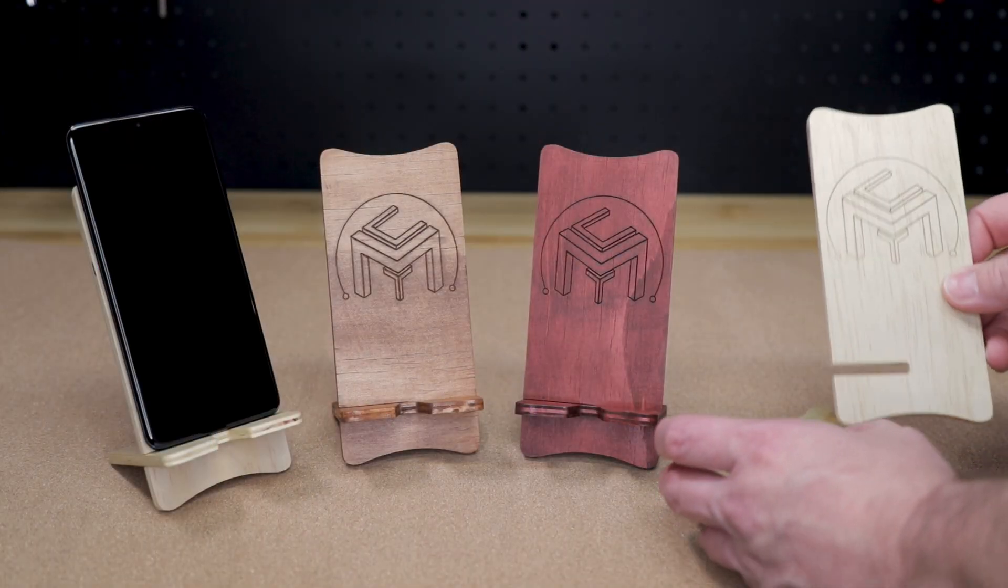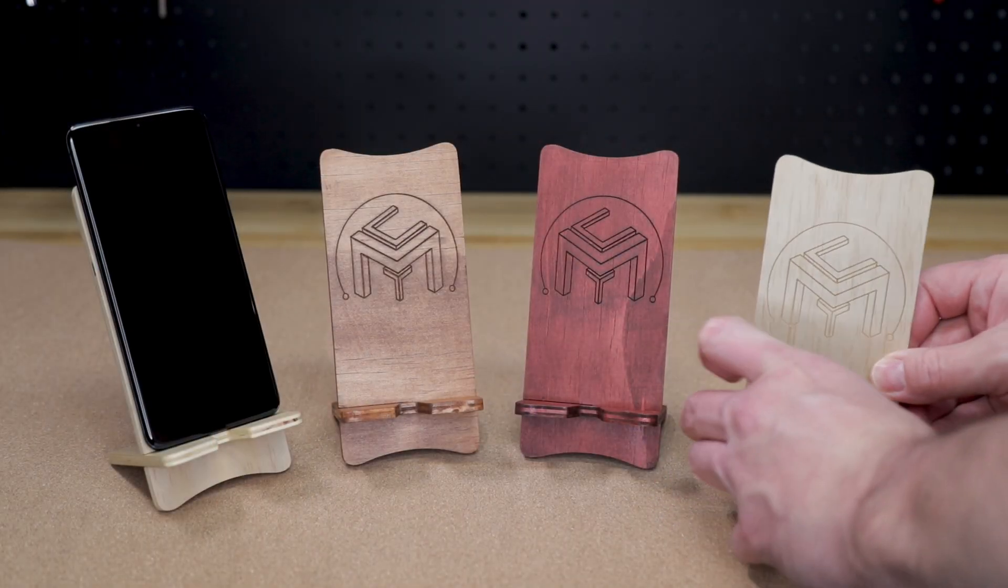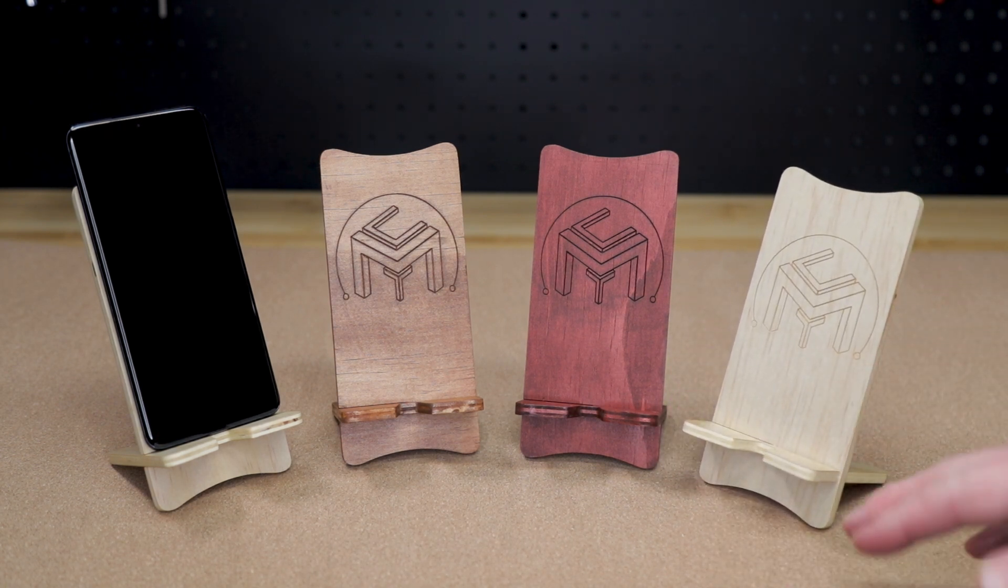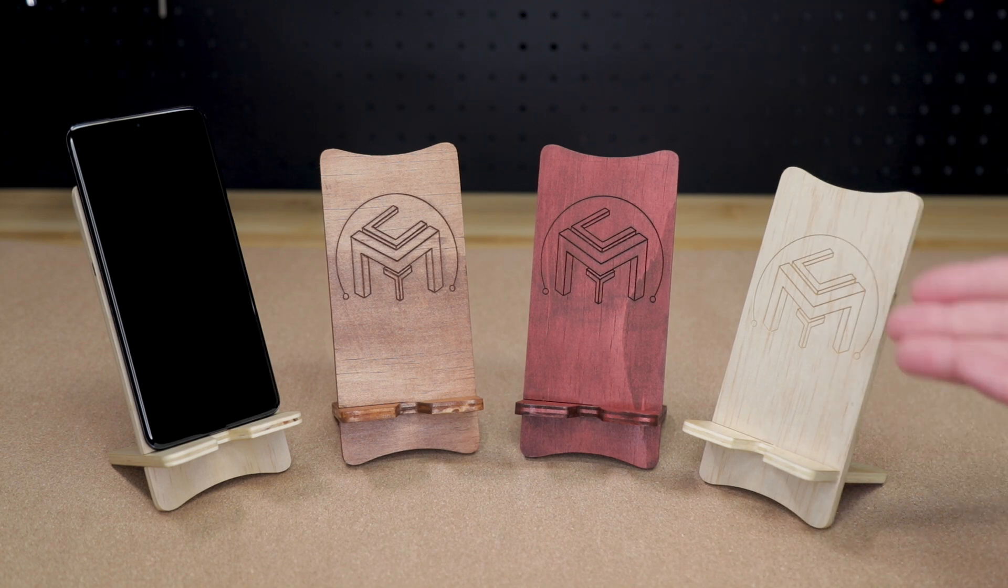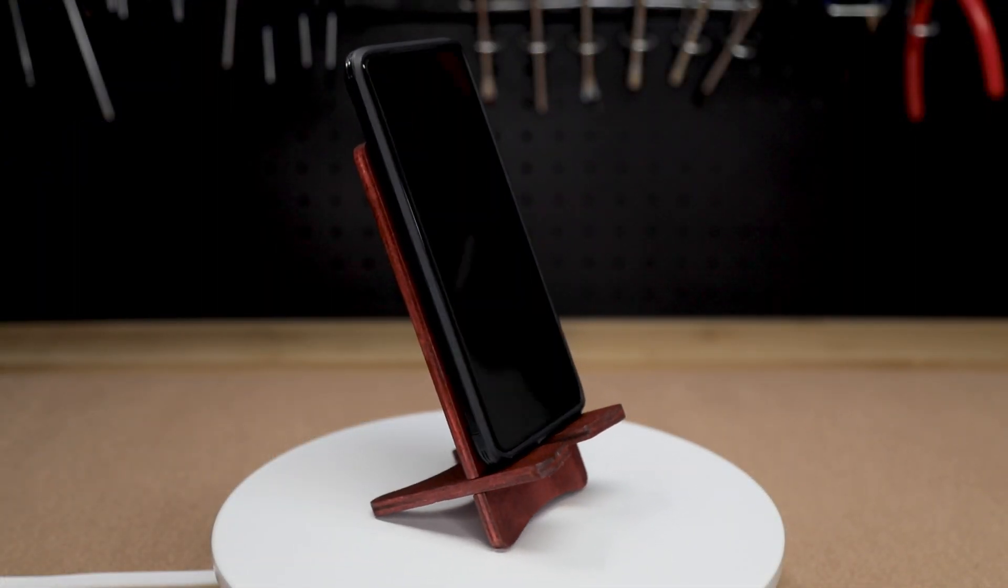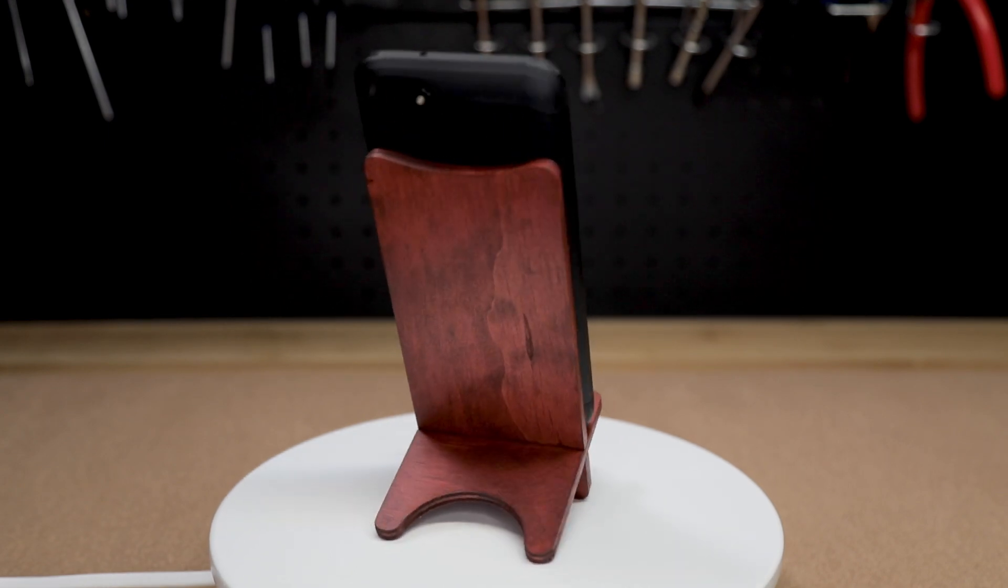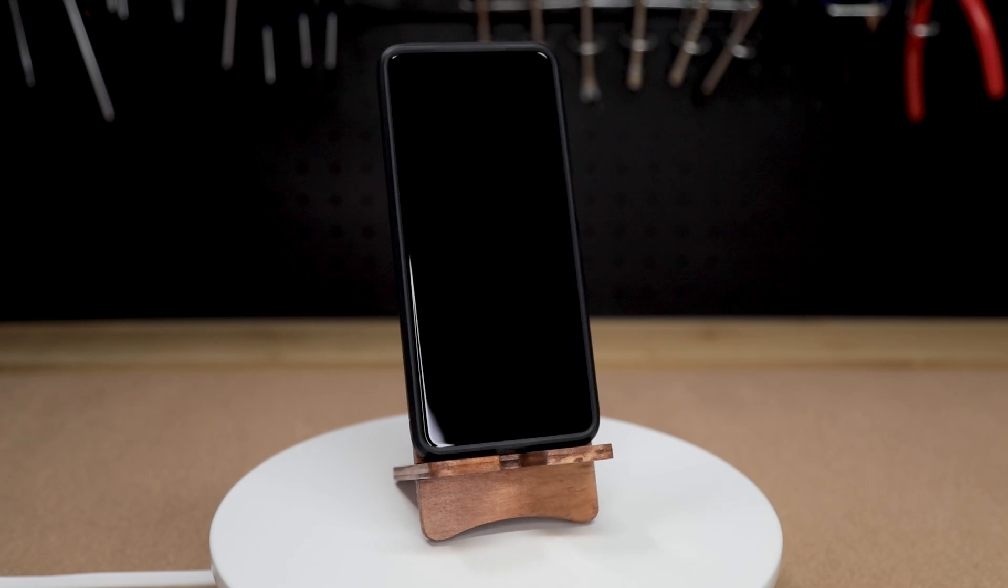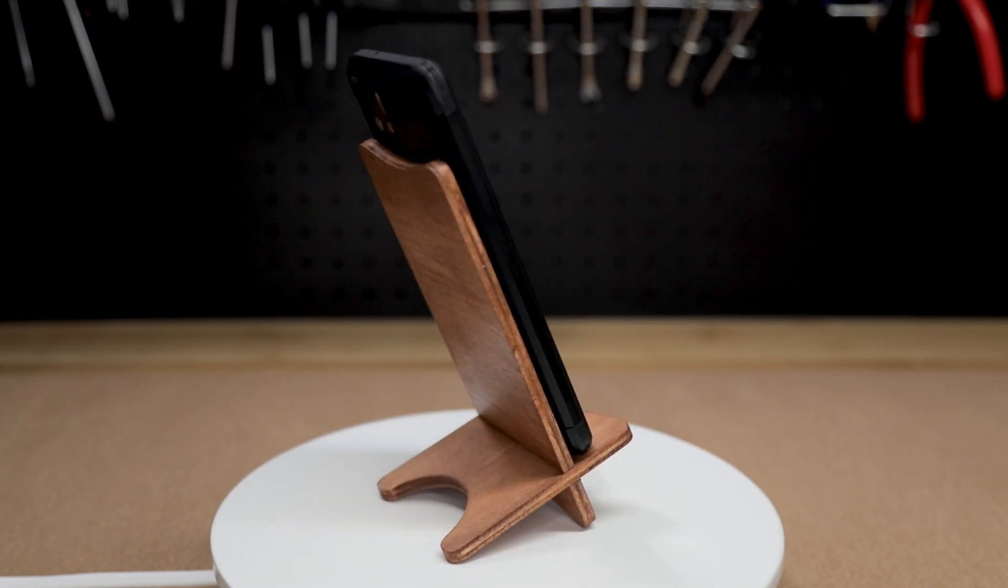So here are my finished phone stands. You should be able to slide the two pieces together and get a friction fit between them so you don't need any glue. If your joints are too loose a simple drop of glue should be all you need to hold the two pieces together permanently. As you can see by staining these phone stands and engraving a logo on them you can kind of customize them to any look you want.